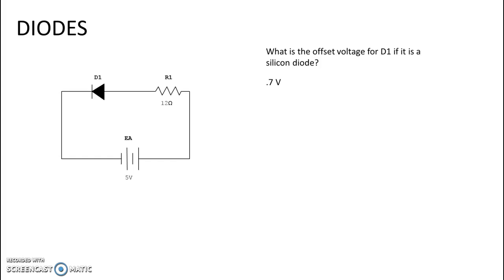So diodes typically have set values. That's what makes them so useful in circuits besides the fact that they allow current only in one direction. And so they don't vary with current flow. You find that voltage drop is consistent based on the type of diode.